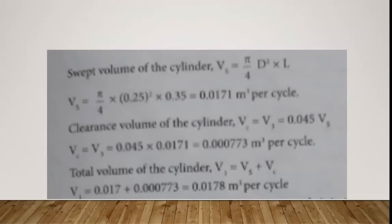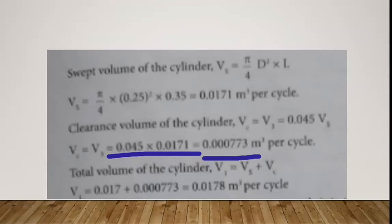Clearance volume of the cylinder is 4.5% of swept volume. That is, clearance volume Vc equals V3 equals 0.045 × Vs. Therefore Vc equals 0.045 × 0.0171, which equals 0.000773 meter cube per cycle.